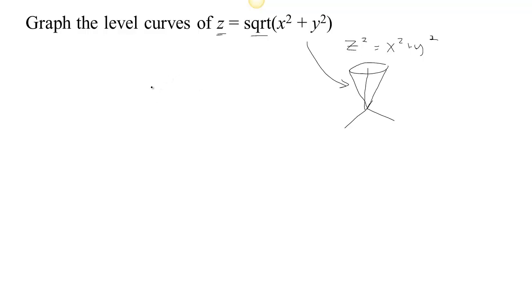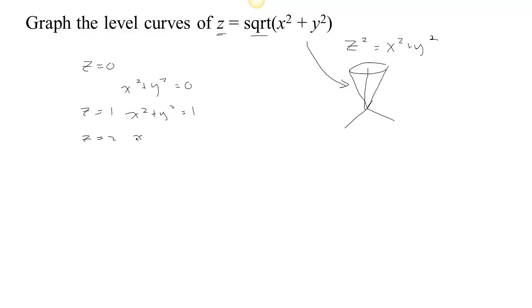We can examine this in terms of its level sets by taking some values for z. When z equals zero, we find x squared plus y squared equals zero. When z equals one, we get x squared plus y squared equals one squared. When z equals two, we get x squared plus y squared equals two squared. When z equals three, we get x squared plus y squared equals three squared. When z equals four, we get x squared plus y squared equals 16, and so on.